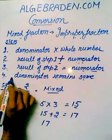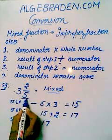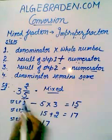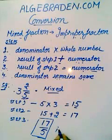And step 4 is denominator remains same. Denominator of mixed fraction is 5 and it will remain same in the improper fraction. So 17 over 5 is an improper fraction.